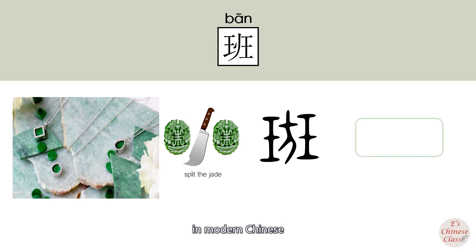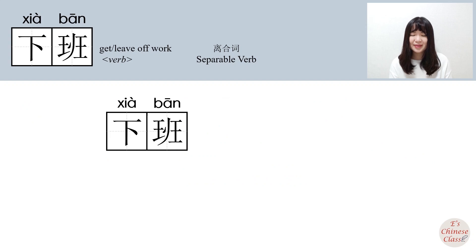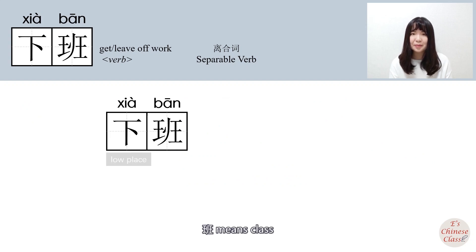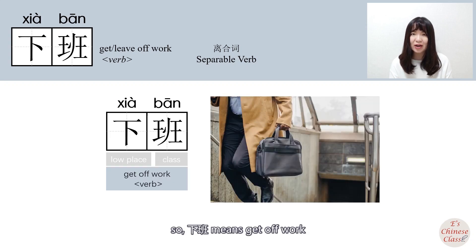In modern Chinese, 班 means class. 下班 — 下 means low place, 班 means class — so 下班 means 'get off work'.